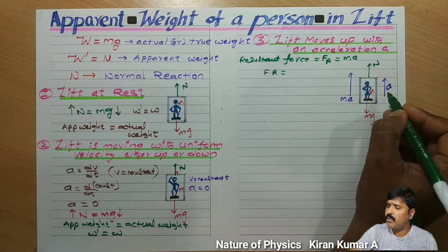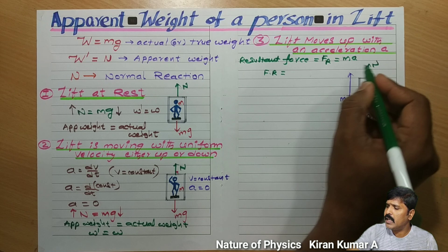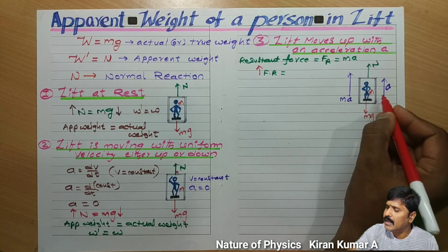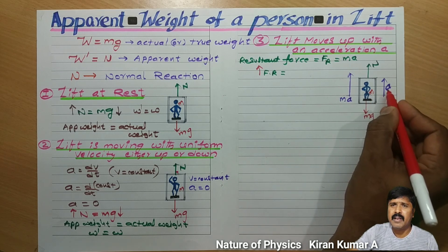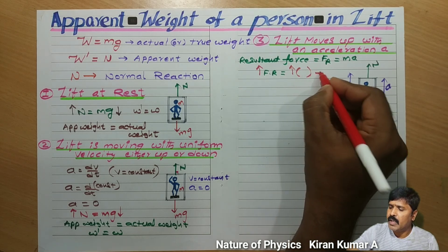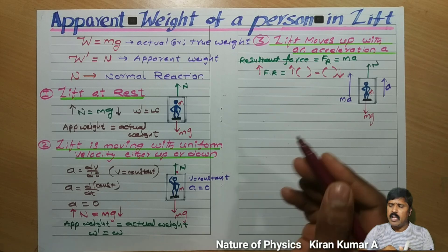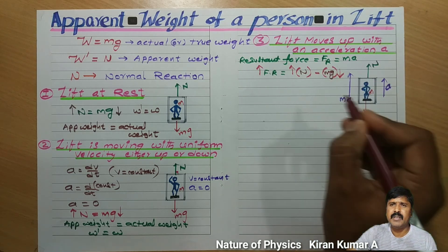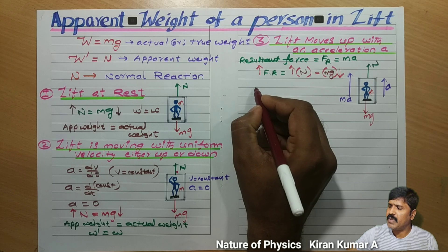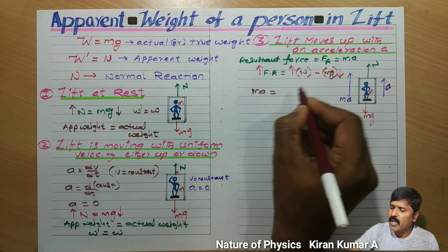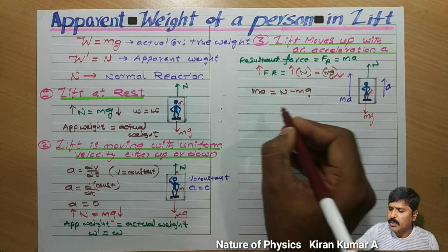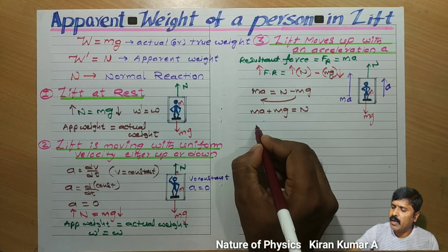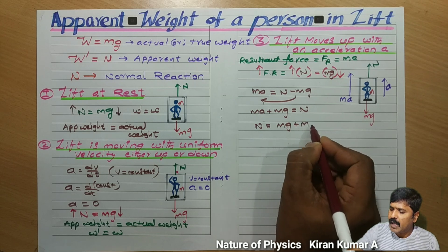The resultant force is an unbalanced force. The resultant force is always along the direction of acceleration of the lift — upward direction. So: upward direction force minus downward direction force. The upward direction force is the normal reaction N, and the downward direction force is the weight Mg. Therefore, resultant force equals towards the resultant force minus away from the resultant force. So Ma is equal to N minus Mg. Rearranging: N is equal to Mg plus Ma.